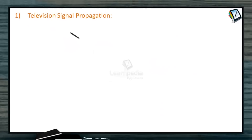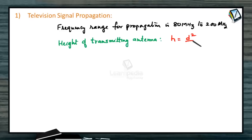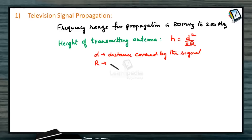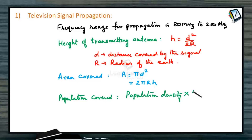Television signal propagation: the frequency range for propagation is 80 MHz to 200 MHz. The height of the transmitting antenna is given by h = d²/2r, where d is the distance covered by the signal and r is the radius of the earth. Area covered A = πd² or equivalently 2πrh. Population covered equals population density multiplied by the area covered.